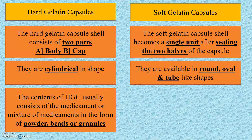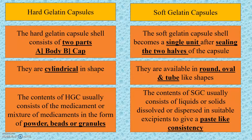The contents of the hard gelatin capsules usually consist of the medicament or mixture of medicaments in the form of powder, beads, or granules. Whereas the contents of the soft gelatin capsules usually consist of liquids or solids dissolved or dispersed in suitable excipients to give a paste-like consistency.